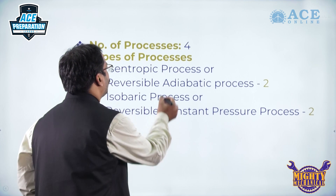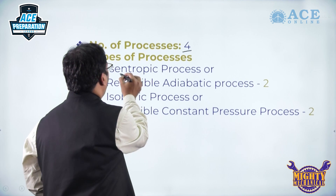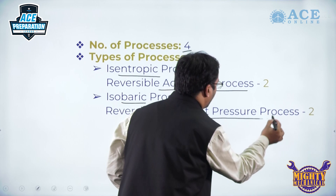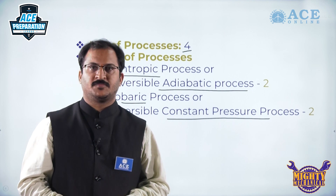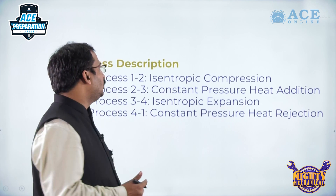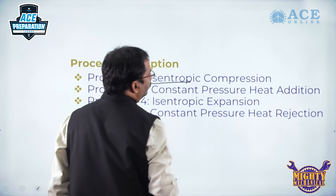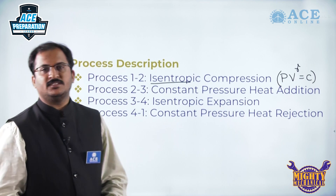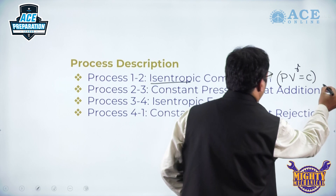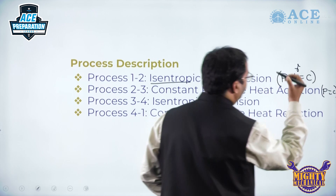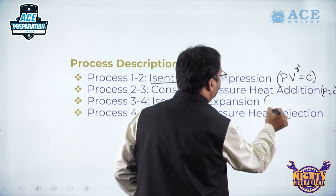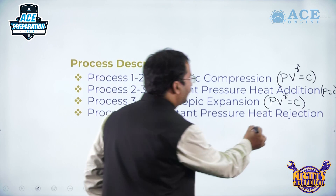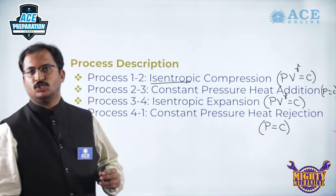In this Brayton cycle we will come across 4 different processes, out of which 2 are isentropic processes or reversible adiabatic processes, and 2 are isobaric processes which are also called constant pressure processes. Process 1 to 2 is isentropic compression which obeys the law PV^γ = constant. Process 2 to 3 is constant pressure heat addition. Process 3 to 4 is isentropic expansion, PV^γ = constant. And process 4 to 1 is constant pressure heat rejection.